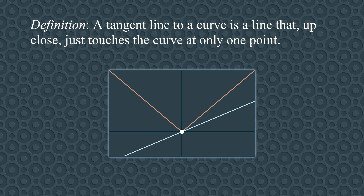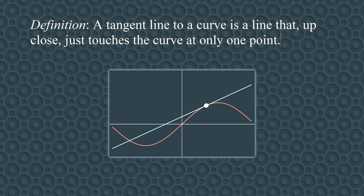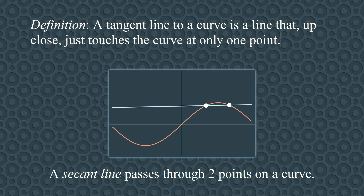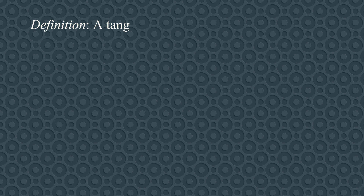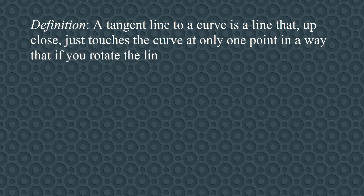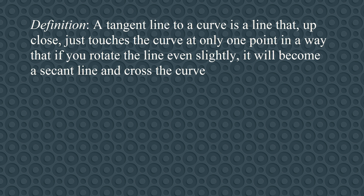For example, look at the graph of y equals the absolute value of x. There are lots of lines that only touch the graph at the origin, but none of them are tangent lines. What is it about these lines that prevents them from just touching the curve? One thing to notice is that you can rotate the line back and forth and it still only touches the curve at one point. But in the example of the tangent line to the sine curve, this does not happen — if you rotate this tangent line even slightly, it will become a secant line and cross the curve at another nearby point. A secant line is a line that passes through two points on a curve. So a tangent line to a curve is a line that, up close, just touches the curve at only one point in a way that, if you rotate the line even slightly, it will become a secant line and cross the curve at a second nearby point.